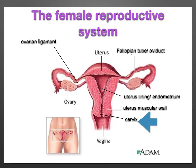The cervix is a ring of muscle at the top of the vagina, and this expands greatly during childbirth. The uterus is a pear-shaped organ; the walls are made of smooth muscle called myometrium, and there's an inner layer called the endometrium. The uterus, also known as the womb, is where the fetus develops during pregnancy.